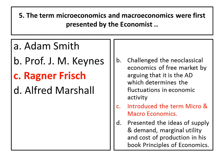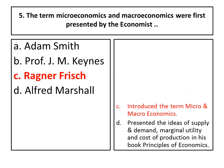The second option, Professor J.M. Keynes, became famous after the Great Depression of 1929 to 1933. He was against classical economics of the free market and presented that it is aggregate demand which determines fluctuations in economic activity. Option D, Alfred Marshall, presented the idea of supply and demand, marginal utility, and cost of production in his book Principles of Economics. So the right answer is C.